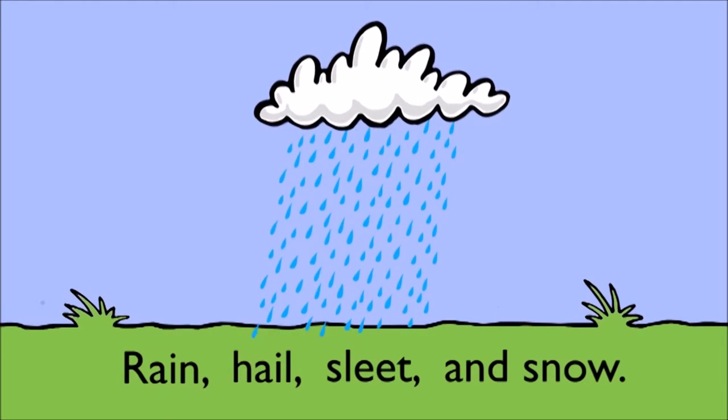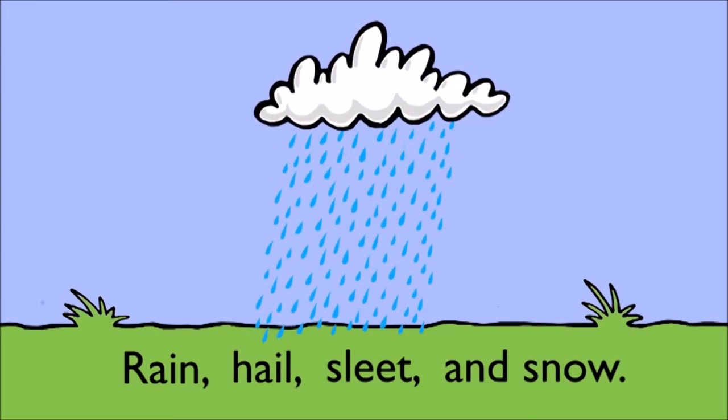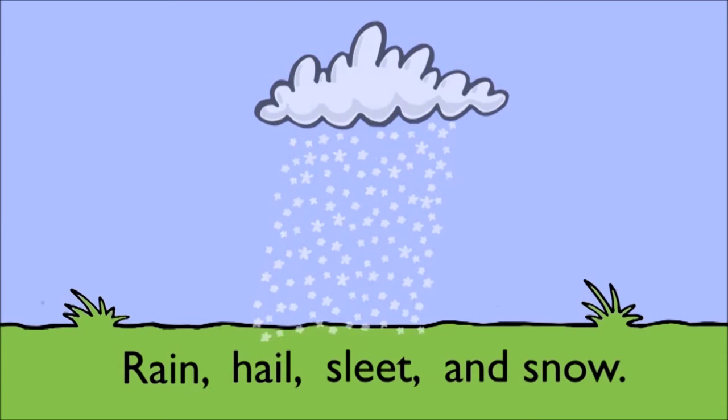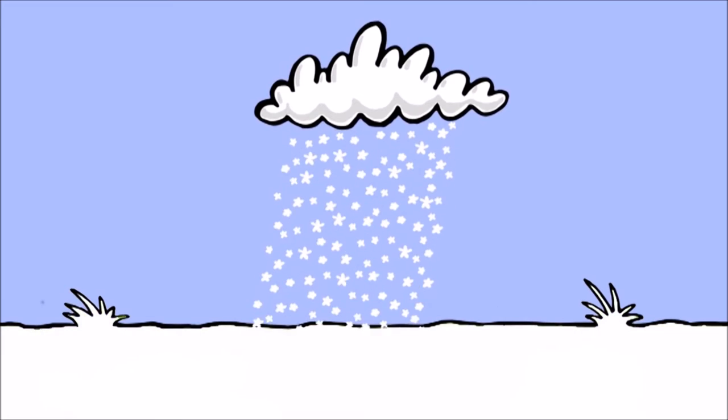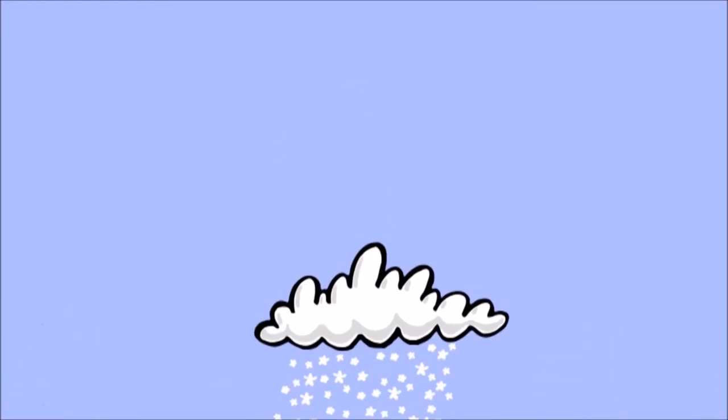For those of you who live in warmer climates, hail is condensed, irregular ice crystals. Sleet is a term used to describe a mixture of snow and rain. Finally, snow is a form of crystallized water.